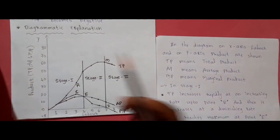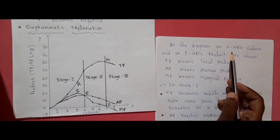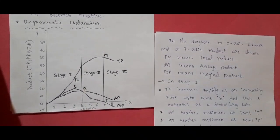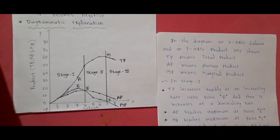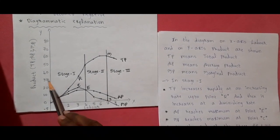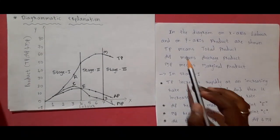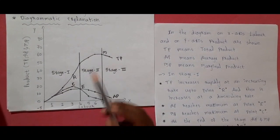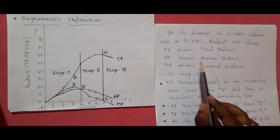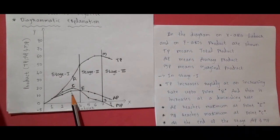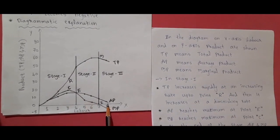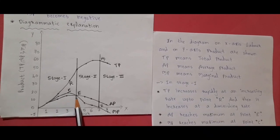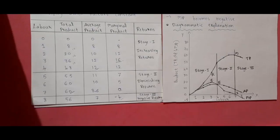Diagrammatic explanation: In the diagram, on the x-axis labour and on the y-axis product are shown. TP means total product, AP means average product, and MP means marginal product.